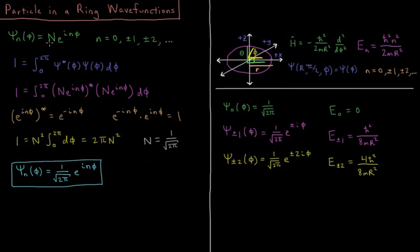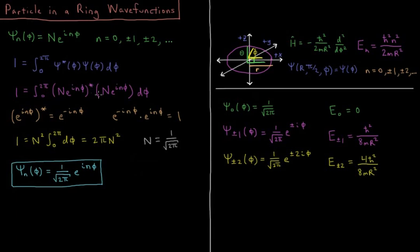To find this normalization constant, we perform the normalization integral: there must be a 100% chance of finding the particle at some value of phi. So 1 equals the integral over the entire domain from 0 to 2 pi of psi-star of phi times psi of phi d phi. We have 1 equals the integral from 0 to 2 pi of N e to the i n phi, complex conjugated, times N e to the i n phi d phi. Taking the complex conjugate means substituting minus i for every i, so e to the i n phi becomes e to the minus i n phi.